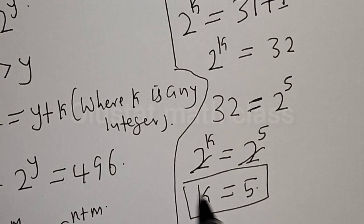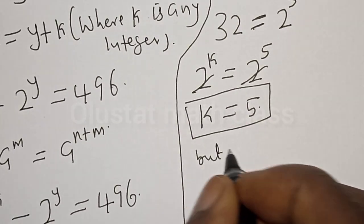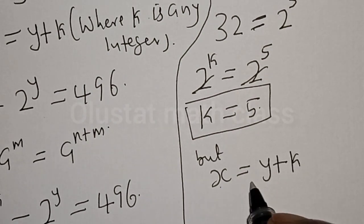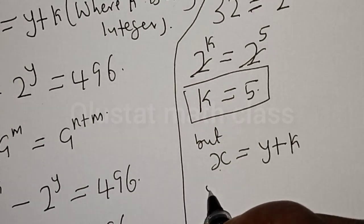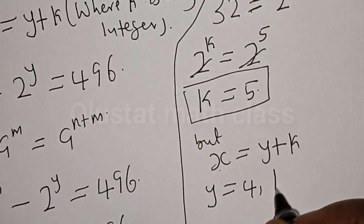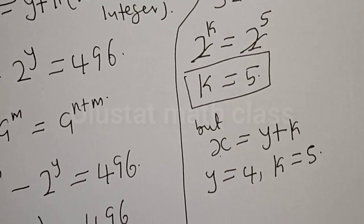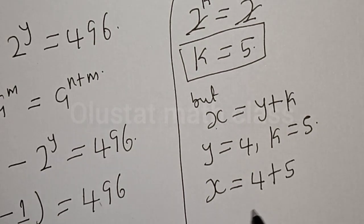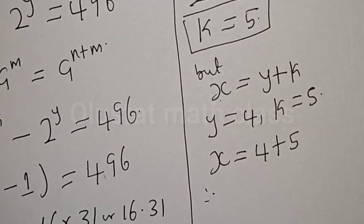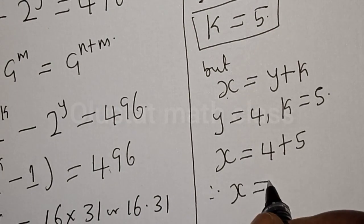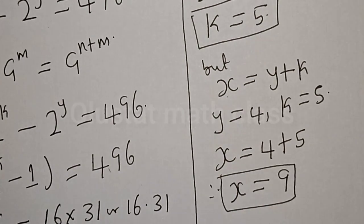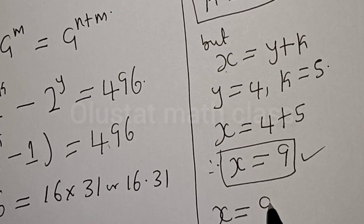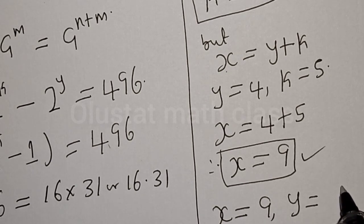We've gotten the value of k to be equal to 5. But x is equal to y plus k, and we want to find the value of x. We know y is equal to 4 and k is equal to 5. Therefore x is equal to 4 plus 5, which is 9. We've gotten the value of x to be equal to 9. Our answers are: x equals 9 and y equals 4.